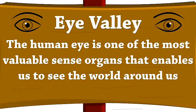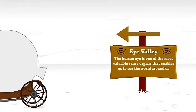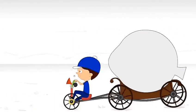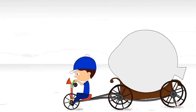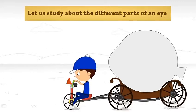The human eye is one of the most valuable sense organs that enables us to see the world around us. Let us study about the different parts of an eye.